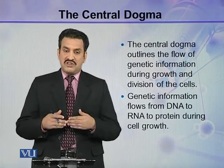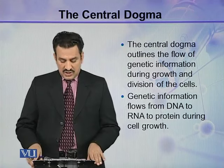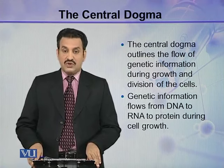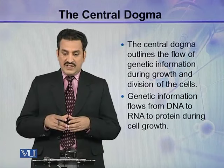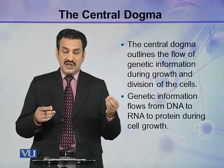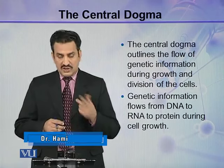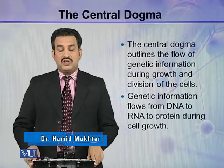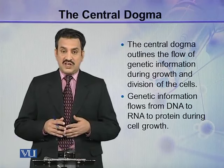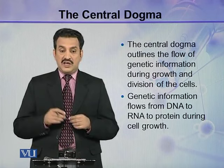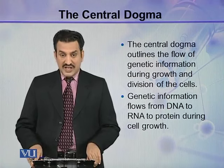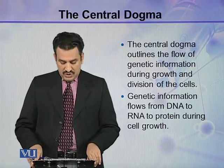The central dogma outlines the flow of genetic information during growth and division of cells. When the cell is growing it needs proteins — how the information coded in DNA is transferred for protein synthesis, and during cell division, how the information stored in DNA is copied to the new cell. Genetic information flows from DNA to RNA to proteins during cell growth.